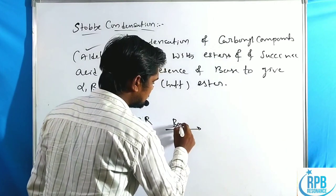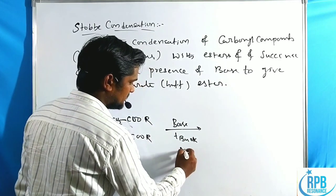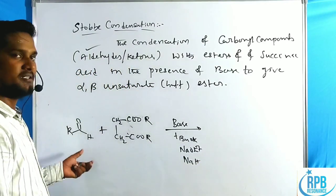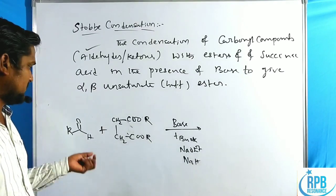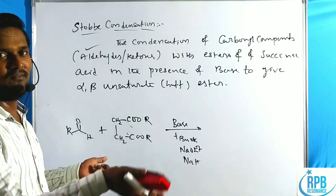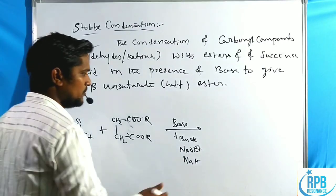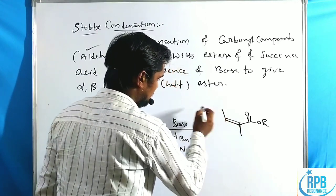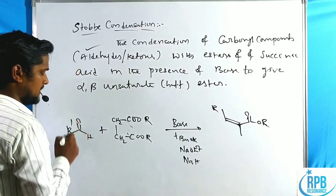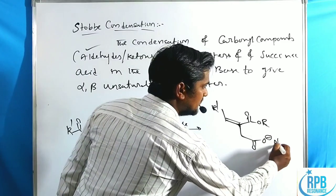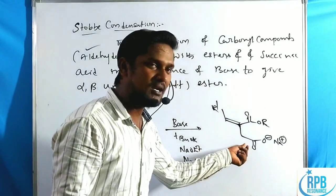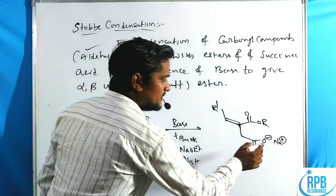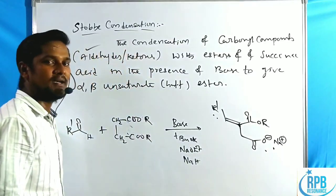In the presence of a base like potassium tert-butoxide, sodium ethoxide, or sodium hydride, the condensation reaction proceeds. Condensation involves elimination of water — an alcohol intermediate forms, undergoes elimination to give the double bond, yielding C=C with COOEt and R groups. One ester functionality gets hydrolyzed; both esters cannot hydrolyze in this reaction. The ester opposite to the C=C formation side gets hydrolyzed.